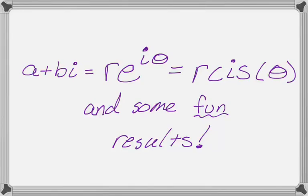Okay, in this video we are going to talk about rectangular, which is a plus bi form, which is equal to r e to the i theta, which I usually call polar form, which is equal to r cis theta, which I usually just call cis form.